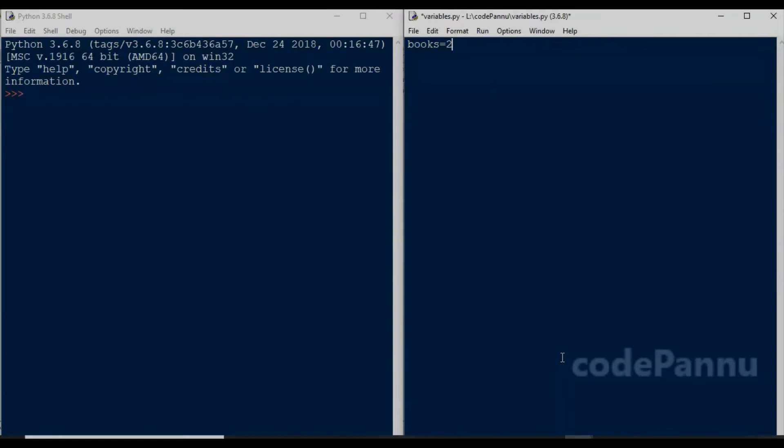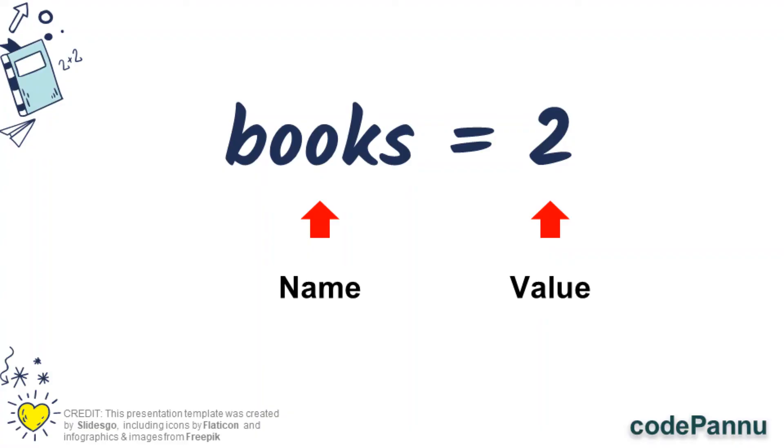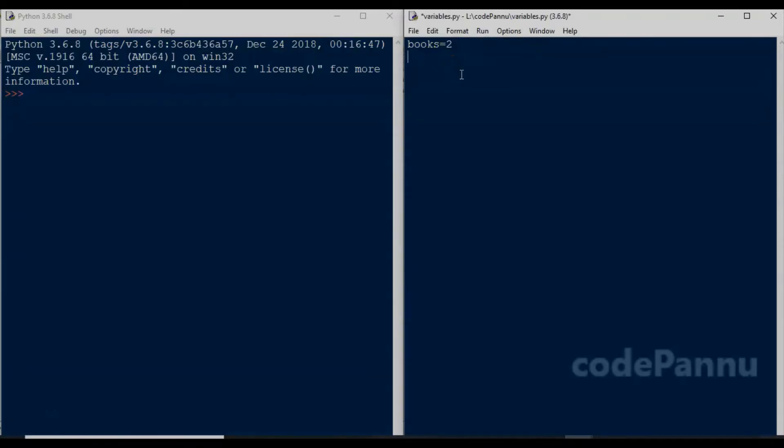When we create a variable, first we write the name that we want. After that, we put an equal to sign and the value comes after that. So when we run the code, Python will read the statement and it will know that we want to create a variable called books and the value is 2.